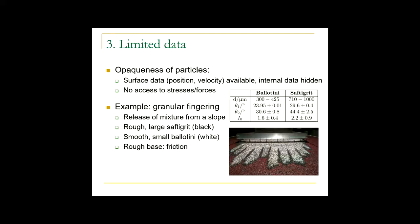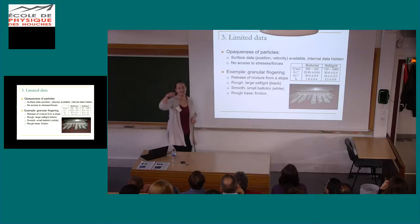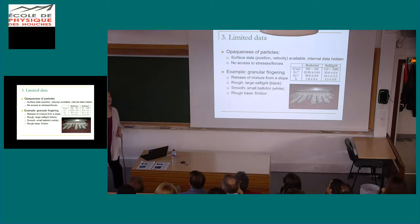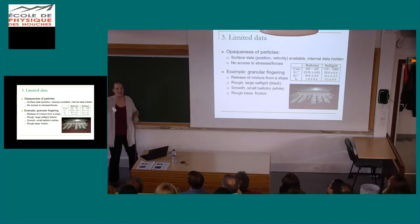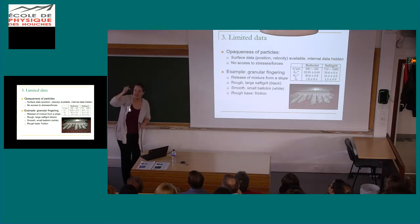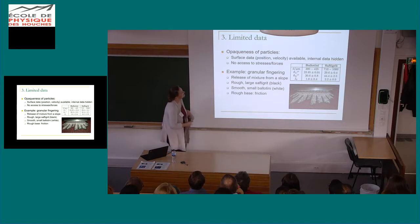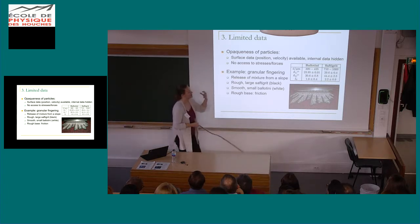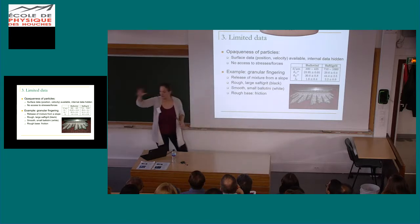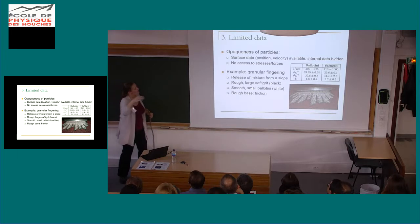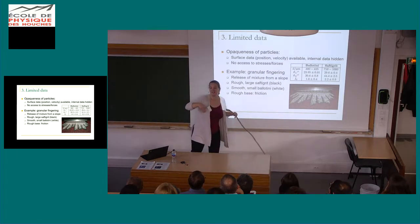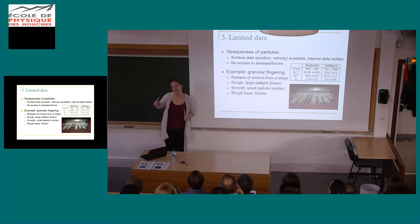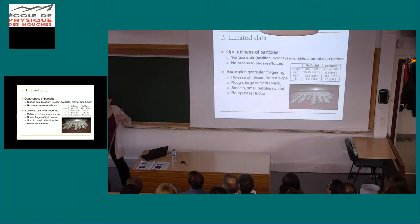The third grand challenge is limited data. This is true across many fields — in a taxi I was discussing rogue waves with someone and we found the same limitation: you either have point data at one location or general limited data. For granular materials, one cause is opaqueness. Because you can't see through the particles, you easily get surface data — velocity, position — but internal data underneath an avalanche is hidden. You also have no access to stresses and forces.